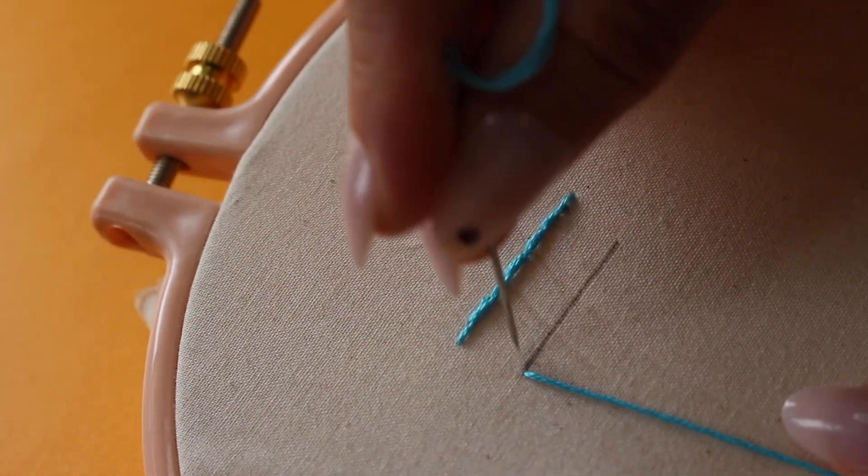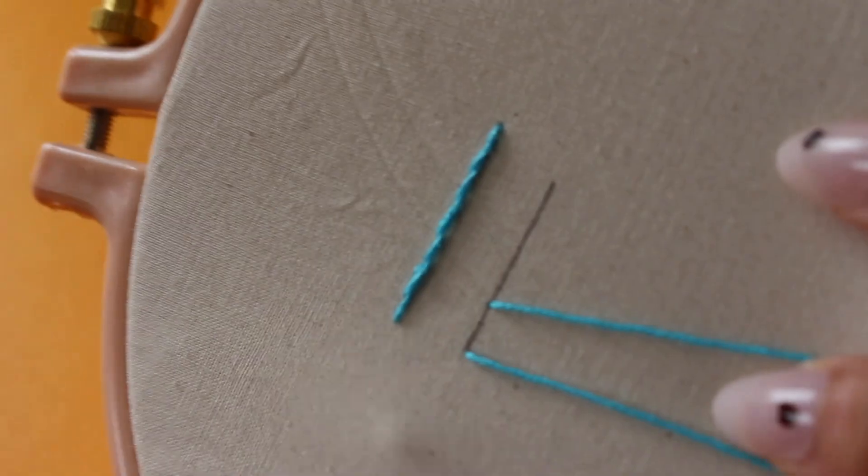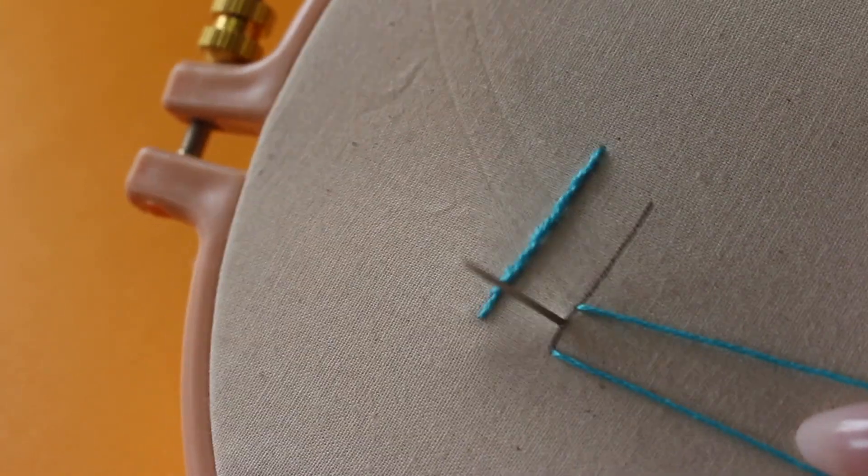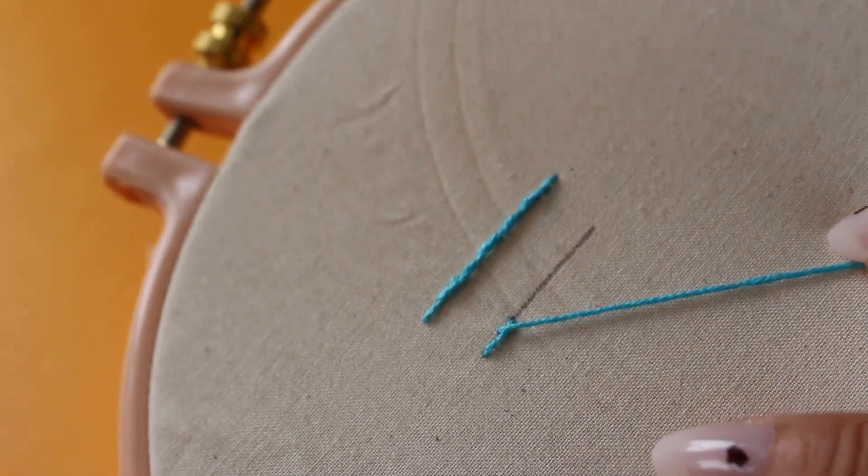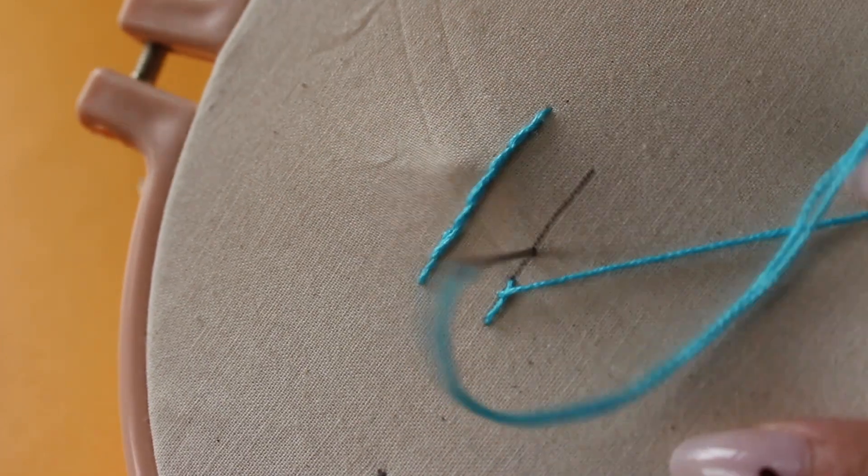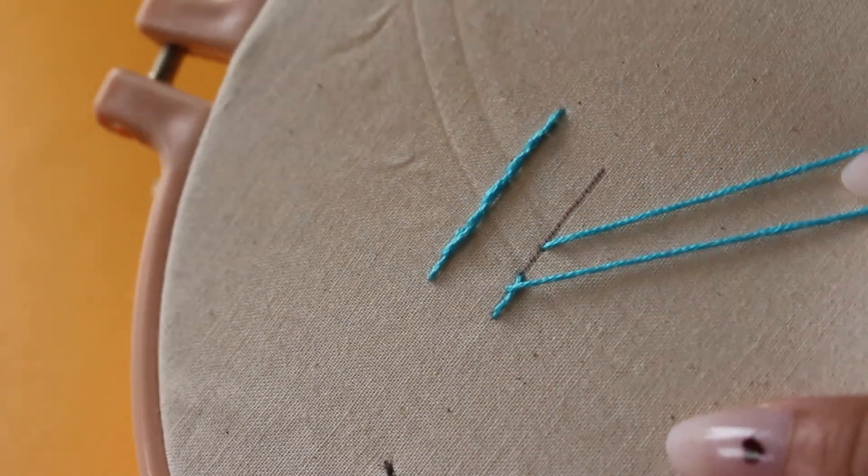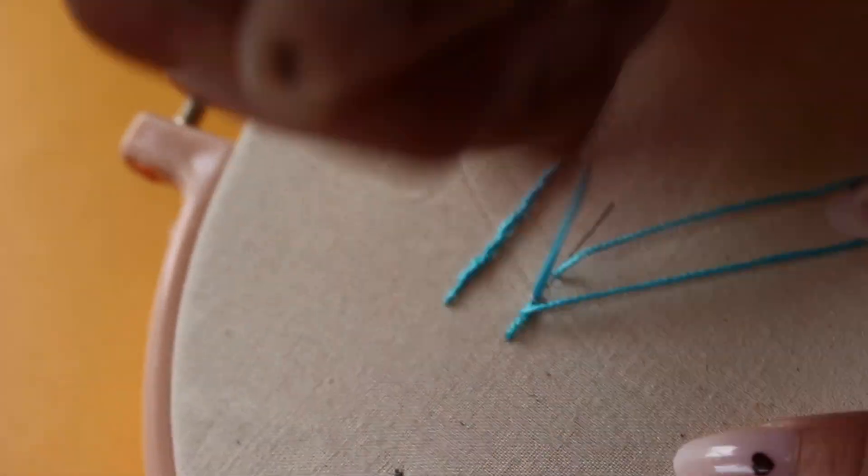For your starting stitch you're always going to want to move forward about double a stitch to leave your room to come in at the middle point. Then you can move forward at a regular stitch length, leaving your loop and coming back up from where you ended your previous stitch.